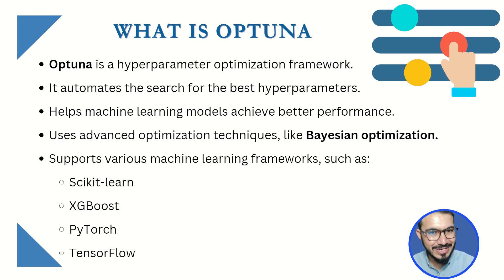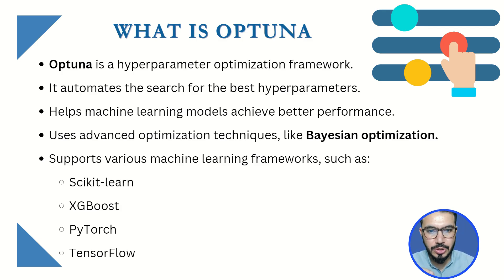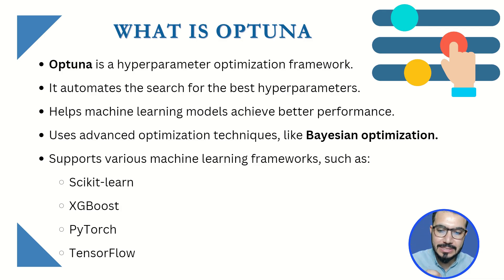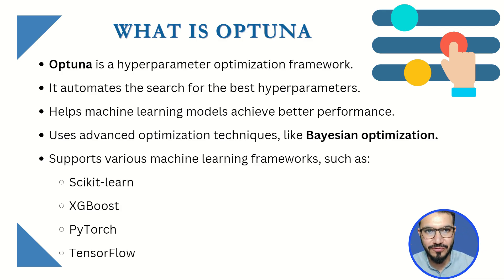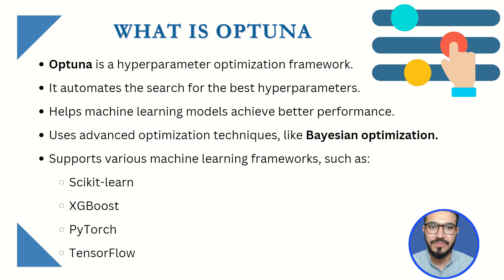If you don't know about Bayesian optimization, don't worry — this is not going to be a mathematical or probability-related class. Behind the scenes, it is not using the brute force algorithm; it is using Bayesian optimization, which is way faster. Apart from that, Optuna can be used in any framework like scikit-learn, XGBoost, PyTorch, TensorFlow, and so on.